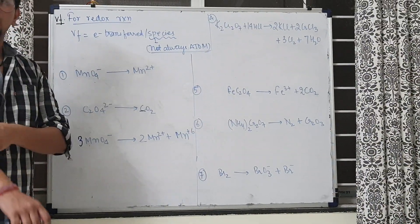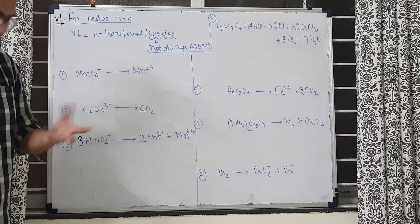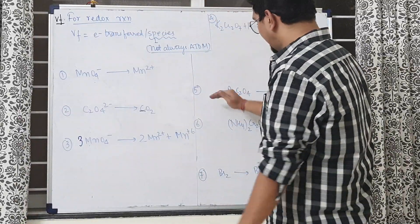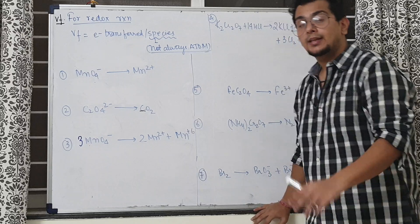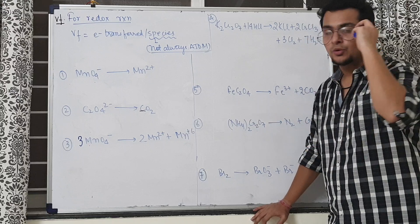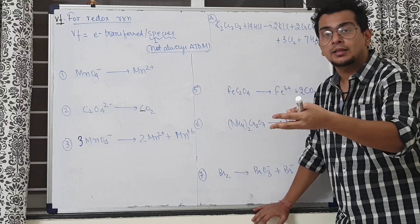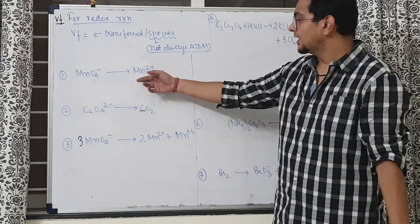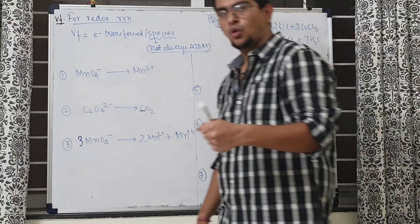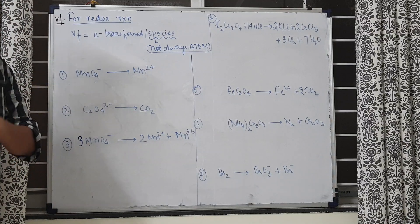In this part of the video I'm going to tell you how to find the valency factor for a redox reaction. I have written 7 examples. All these 7 are of different types — these are all possible types of questions which can come in this segment. Each one has a higher level than the previous one, going from easiest to toughest. Make sure you watch the full video to understand how to find the valency factor in each case.